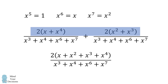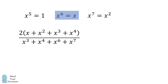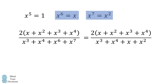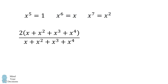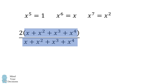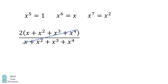So we get the combined fraction, which we simplify by recalling that x to the power of 6 equals x and x to the power of 7 equals x squared. The denominator becomes x plus x squared plus x cubed plus x to the 4th, rearranged in ascending order. The numerator is 2 multiplied by that same quantity — x plus x squared plus x cubed plus x to the 4th — so these two quantities cancel, and the entire expression simplifies to exactly 2.